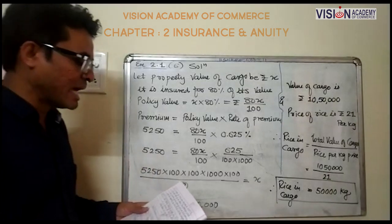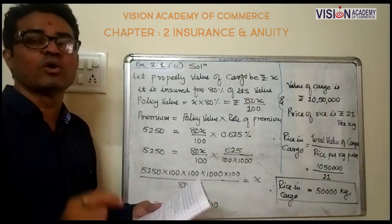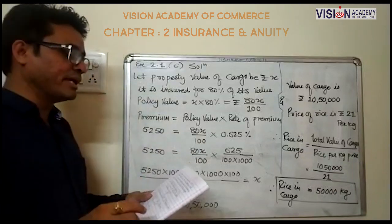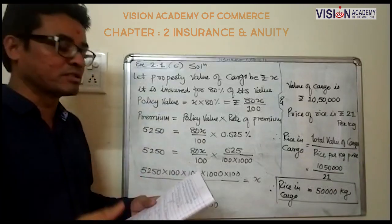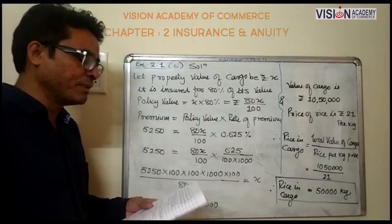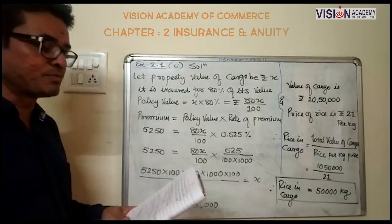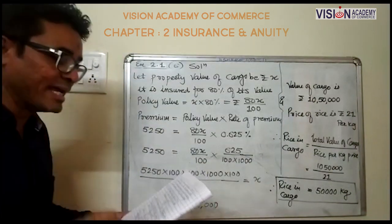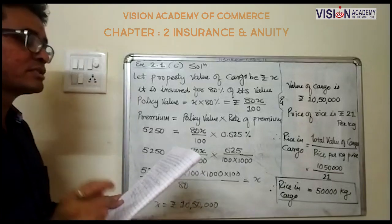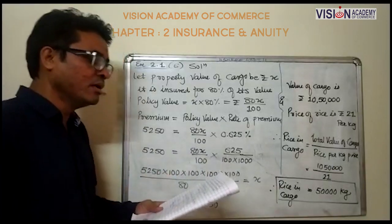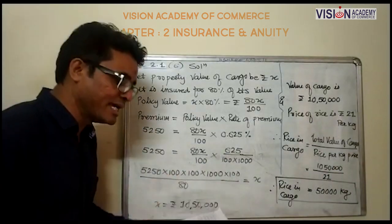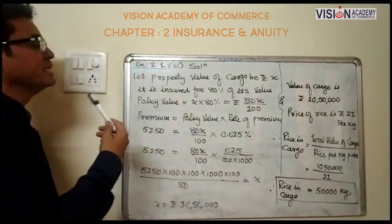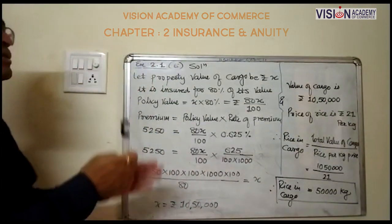Question number 6: A cargo of rice was insured at 0.625 percent to cover 80 percent of its value. The premium paid was rupees 5,250. The price of rice is rupees 21 per kg. Find the quantity of rice in the cargo.